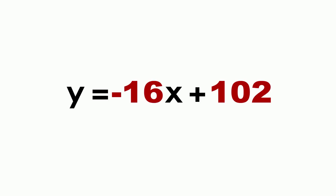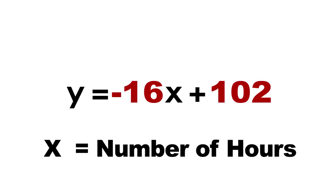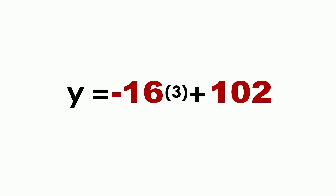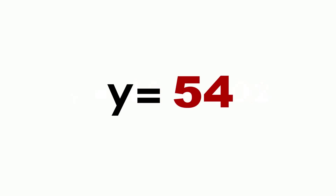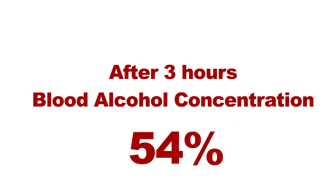Now how do I use this line to make predictions? Suppose I want to know my blood alcohol concentration after 3 hours — I can use this line to do that. x represents the number of hours, so I'm going to plug in 3 into x. I get y equals negative 16 times 3 plus 102, and I get 54 as an answer. That means after 3 hours, my blood alcohol concentration level is 54%. That's still not low enough after 3 hours.